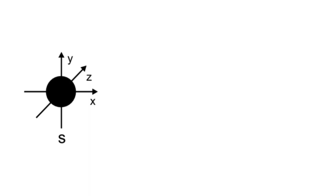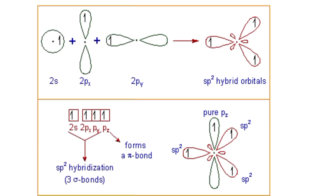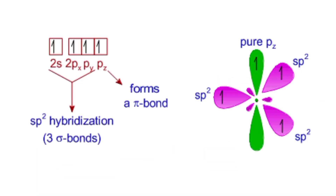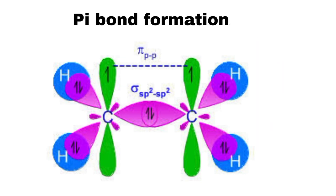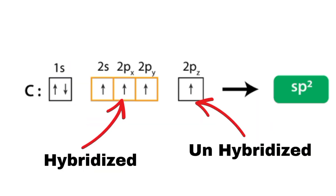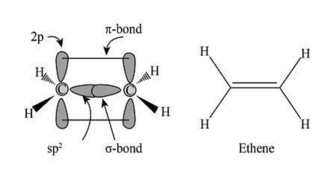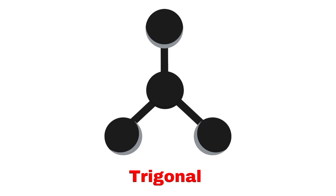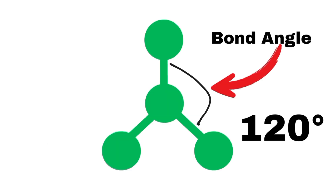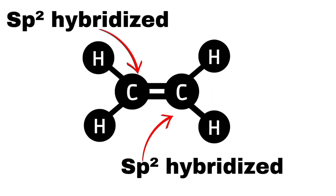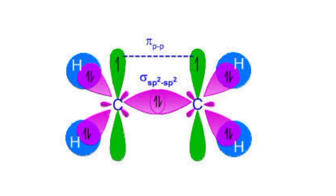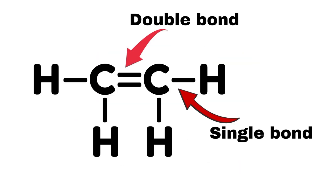In sp2 hybridization, one s orbital mixes with two p orbitals to form three equivalent sp2 hybrid orbitals. The third p orbital remains unhybridized and is often involved in pi bonding. The three sp2 hybrid orbitals arrange themselves in a trigonal planar geometry with bond angles of 120 degrees. In ethene, each carbon atom is sp2 hybridized, leading to a planar structure with a double bond between the carbons and single bonds with hydrogen atoms.